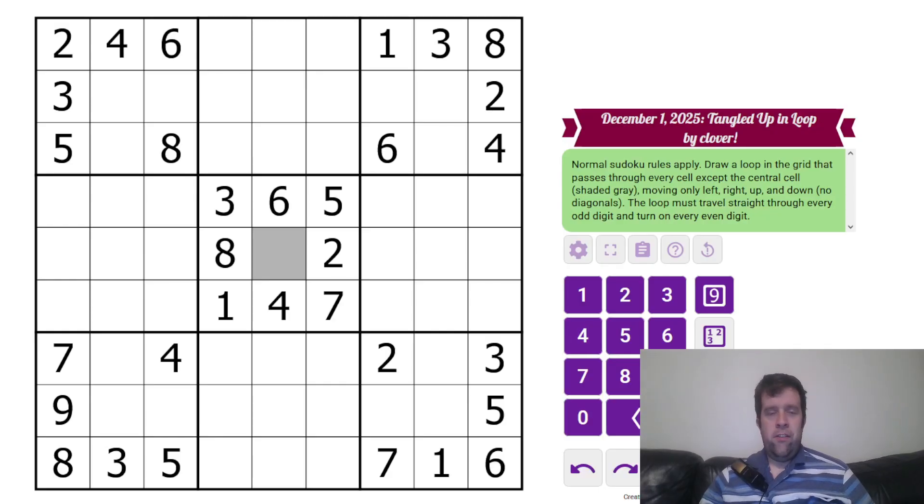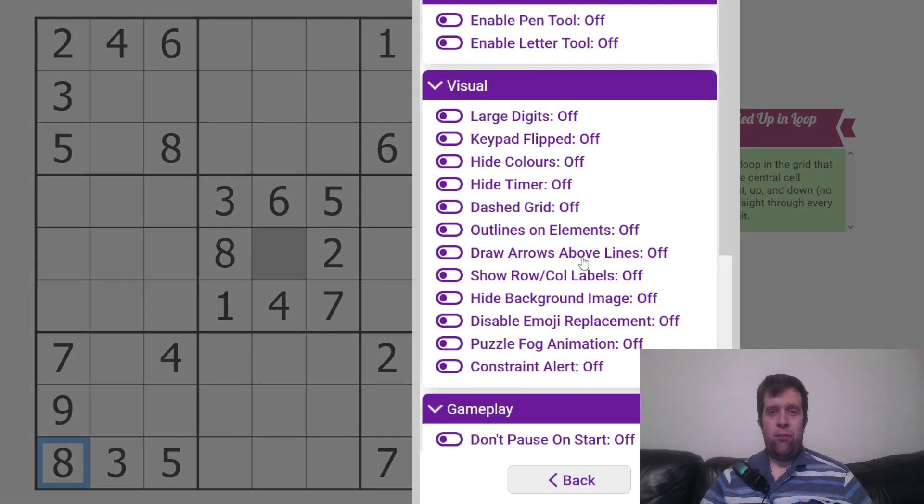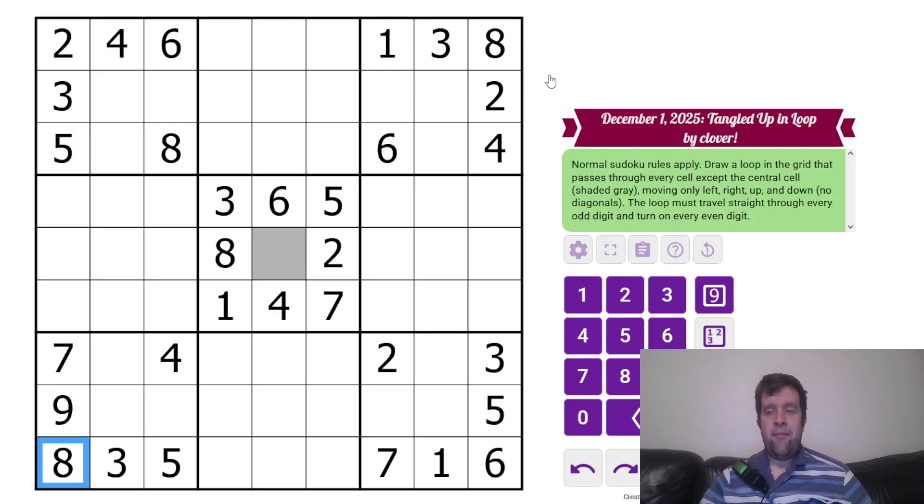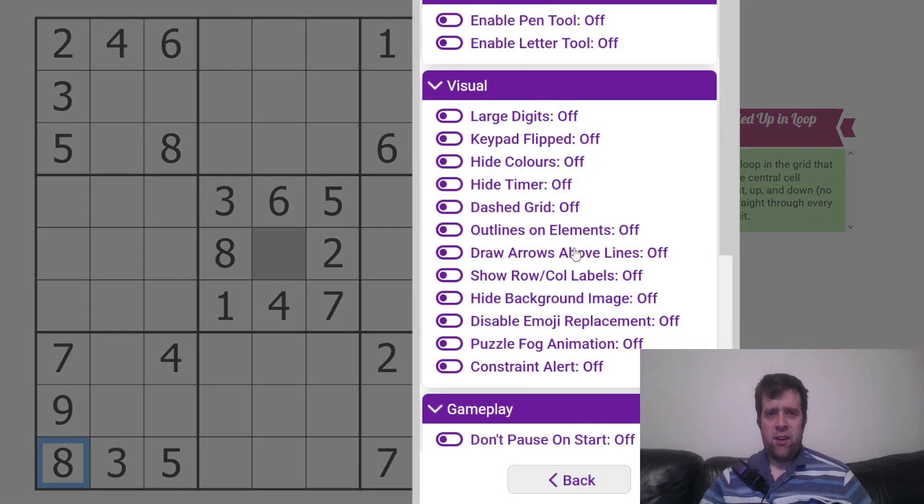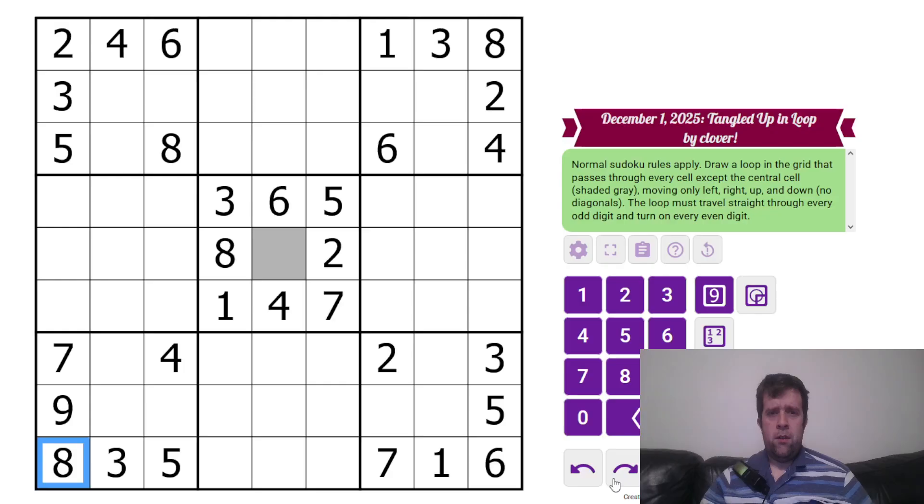So this is a loop doku. What does loop doku mean? So normal Sudoku rules apply. Each box, each row, and each column, let's intend to just want to know once each. Now, normal, draw a loop in the grid that passes through every cell. So the first thing we're going to need to do is turn on pen tool. If you haven't done that in Sudoku pad, here's how you do it. If you press on settings, smash enable pen tool, that's it.